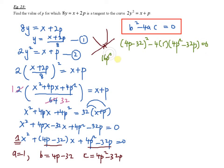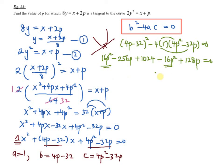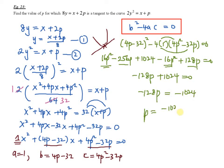Expanding: 16p squared minus 256p plus 1024, then minus 16p squared plus 128p equals 0. The 16p squared terms cancel. Combining: negative 256p plus 128p gives negative 128p, plus 1024 equals 0. So negative 128p equals negative 1024, therefore p equals negative 1024 divided by negative 128, giving p equals positive 8.